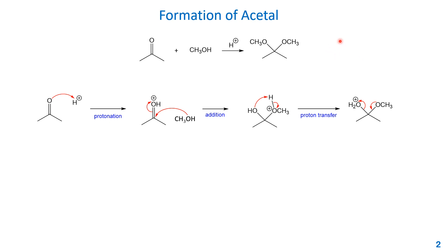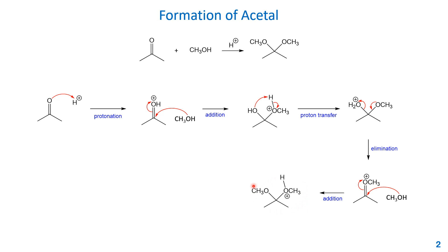After elimination of water, you get another positively charged intermediate where this carbon is more electrophilic. A second molecule of methanol then attacks this carbon, using the lone pair on its oxygen, and pushes the pi electrons to the oxygen. That nucleophilic addition gives a new intermediate. The last step is deprotonation by a base, pushing the sigma electrons to the oxygen, and finally giving the neutral acetal product.